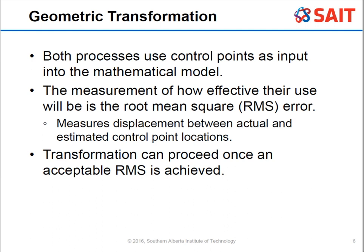Once that's done, we measure effectiveness using the RMS error, which measures displacement — because you can't make it fit perfectly. Think of it like a piece of rubber placed onto a board with nails as control points: as you push it down, it elongates or bunches up in places. That displacement is the RMS error. Once you have a good enough RMS value, you can proceed with the transformation.